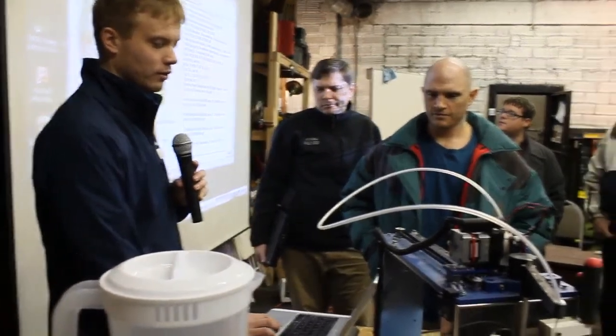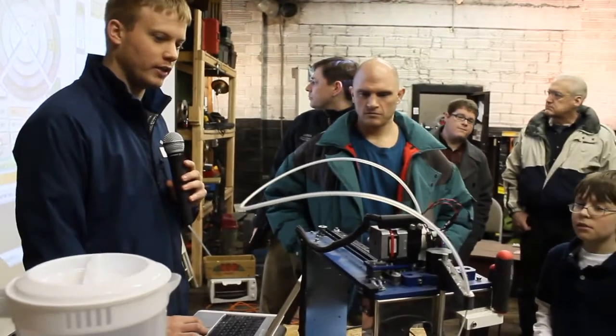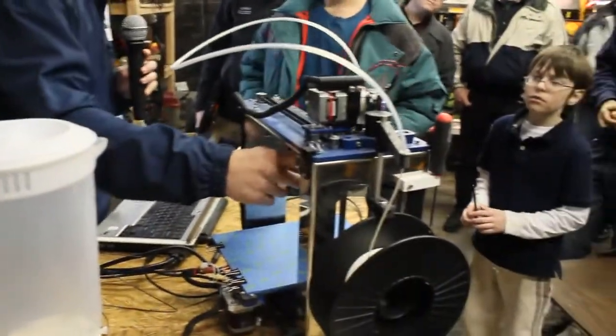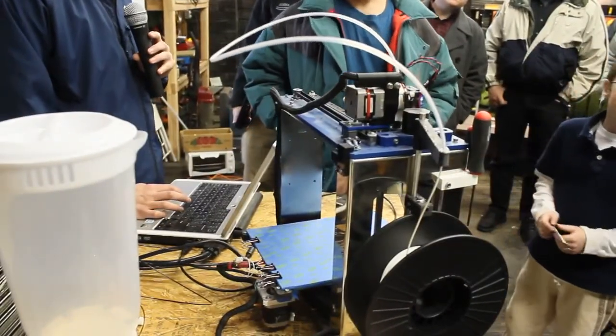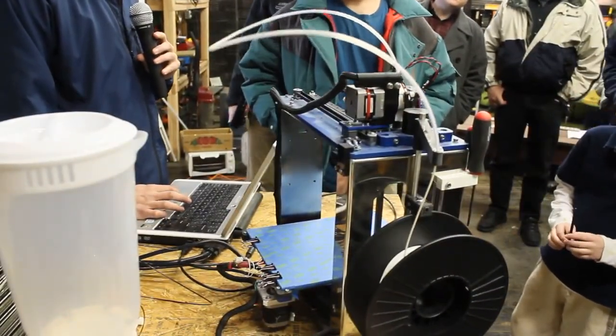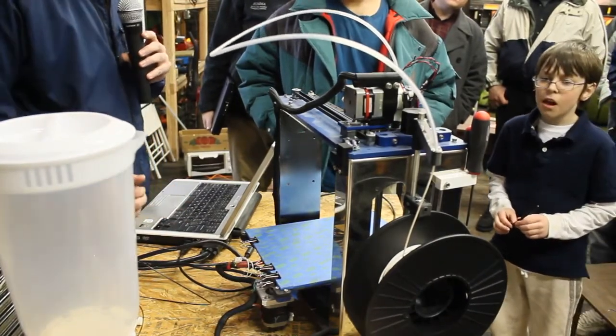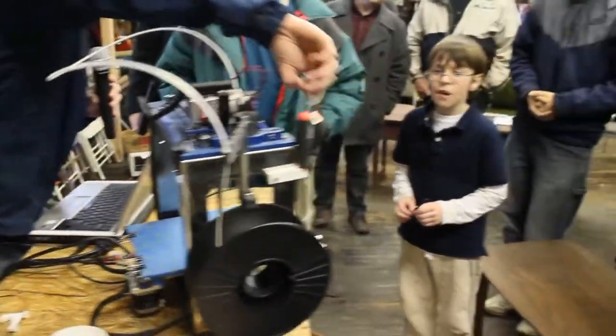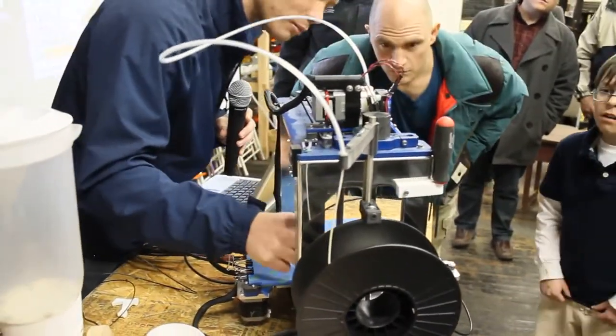So once it's loaded in, the file already has everything to sort of set up the printer. What I'm going to do before we actually get started is hit the manual extrude button. And that's going to make some filament start to come out of the hot end.